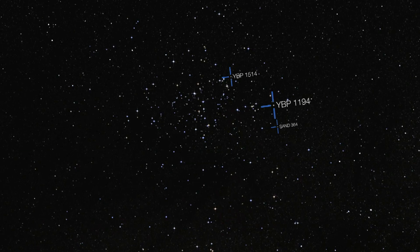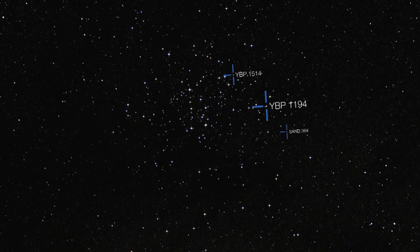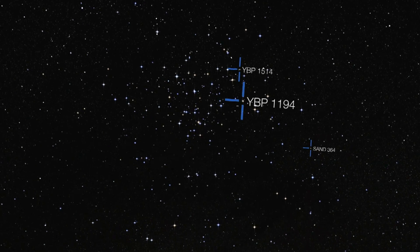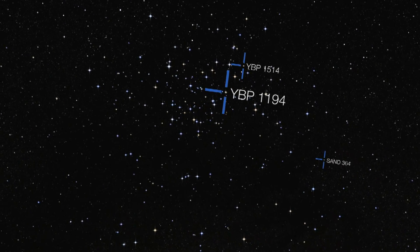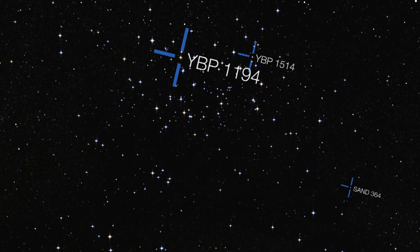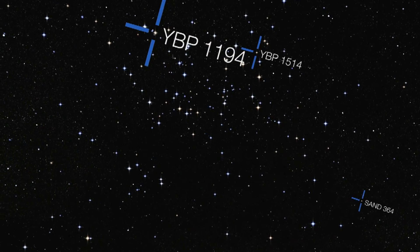Astronomers using ESO telescopes and others around the world have found three new planets orbiting stars in a cluster called Messier 67. Only a handful of such planets in clusters were known up to now.